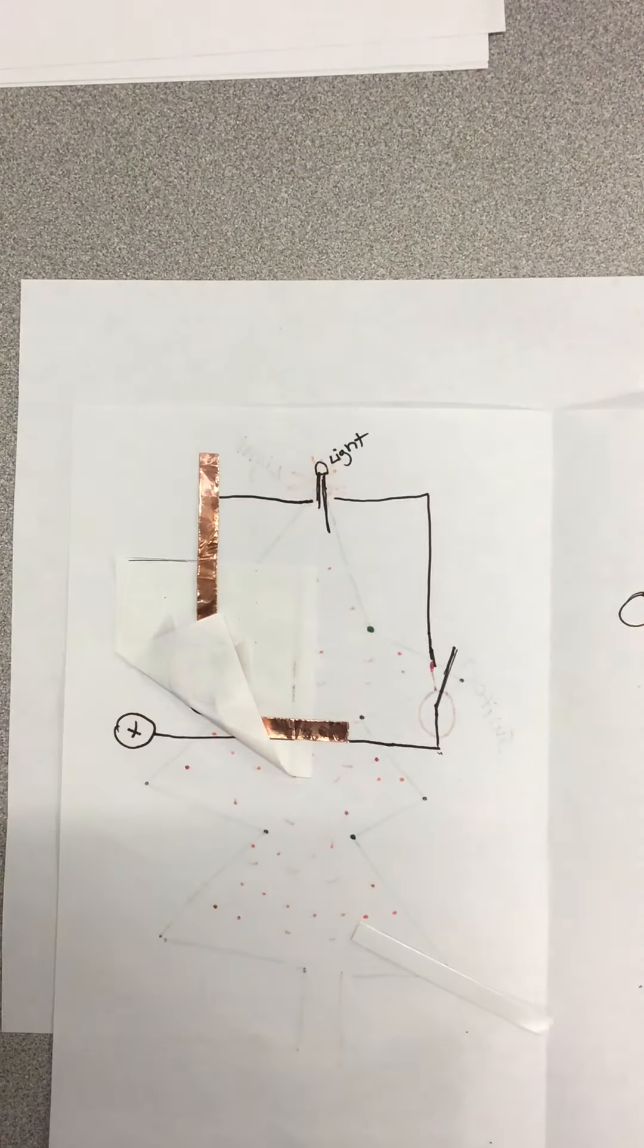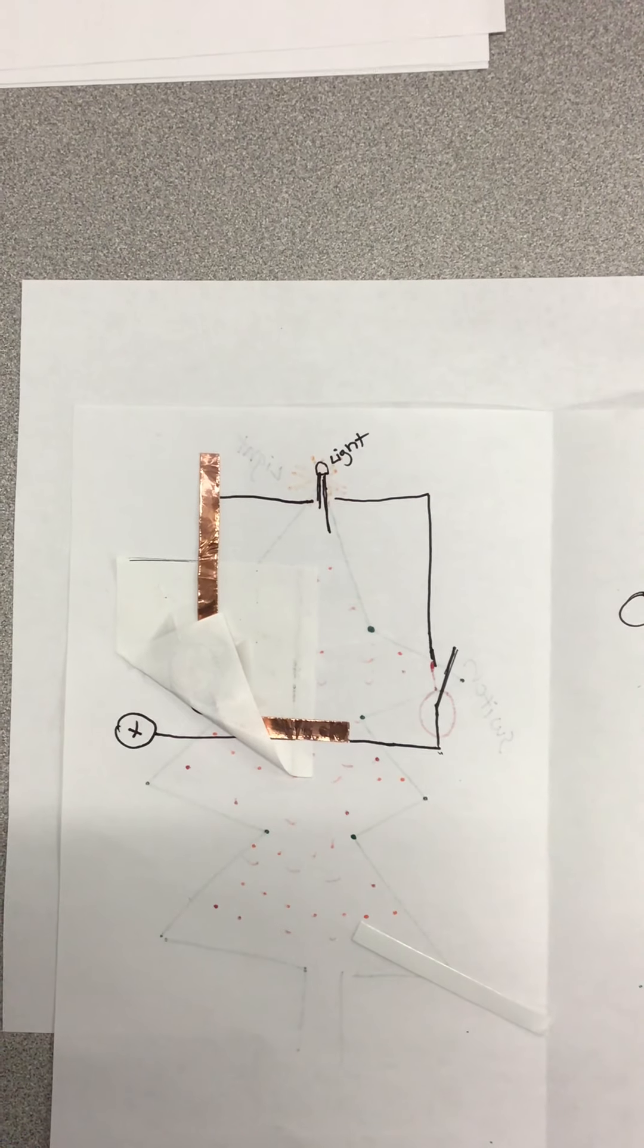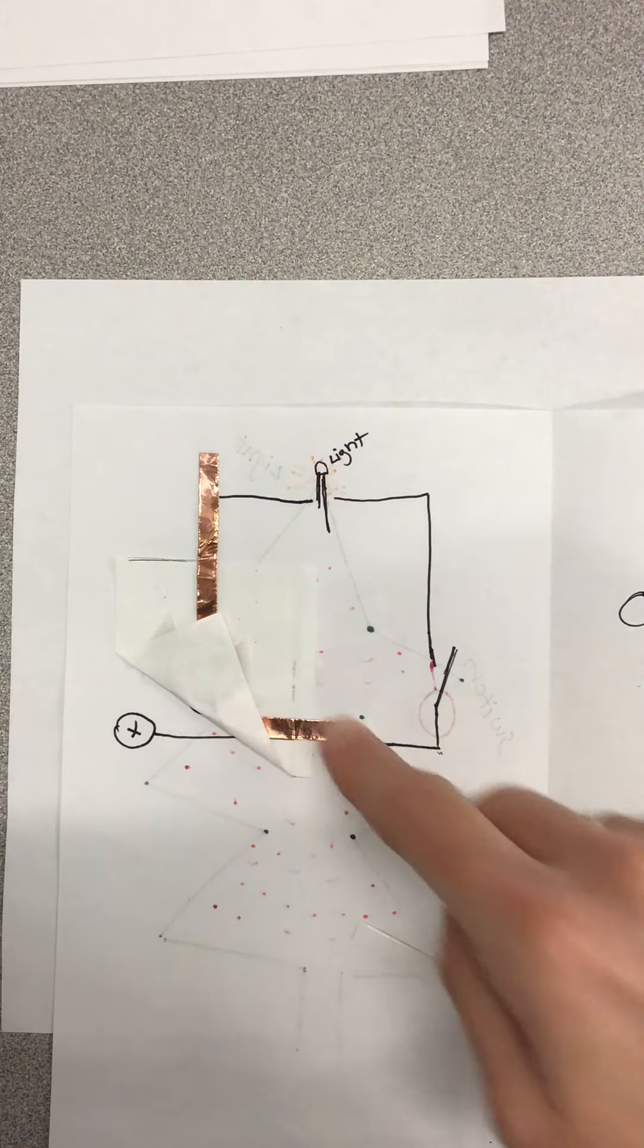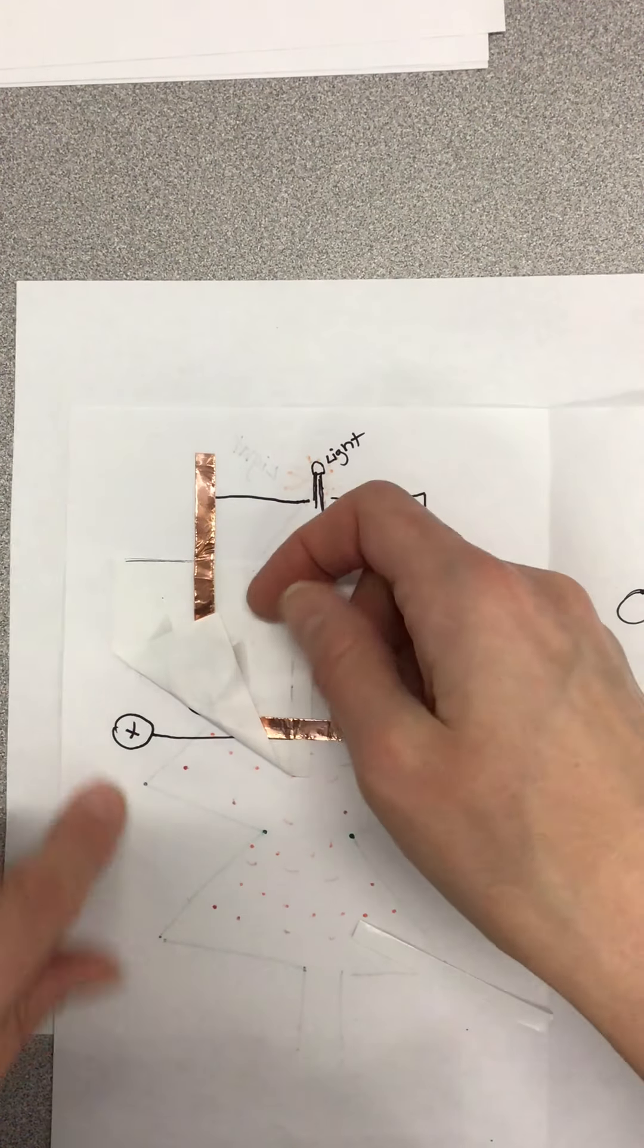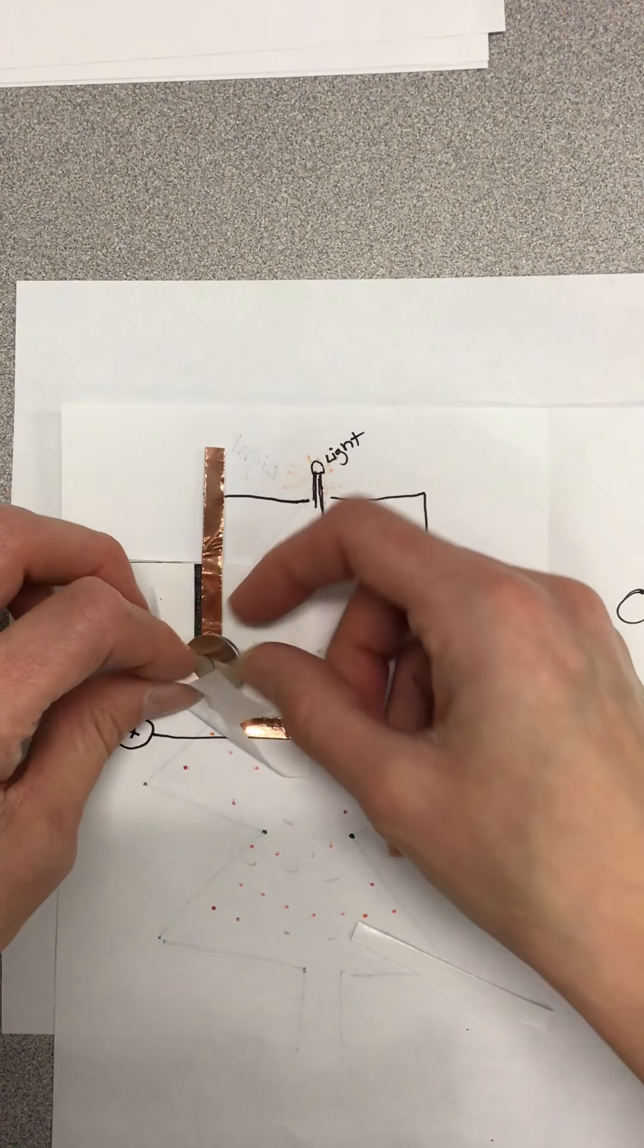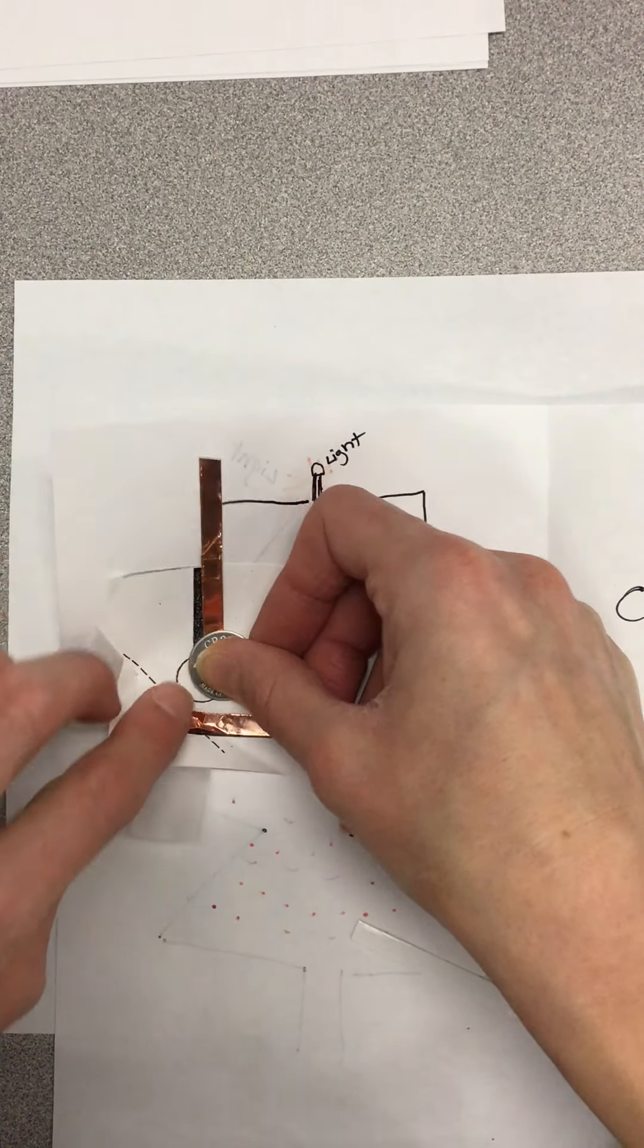That's one of the troubleshooting things you can do if your light doesn't light up. You can make sure that your battery is all placed correctly and that these are lining up and the plus and minus are correct and that this is going over that.